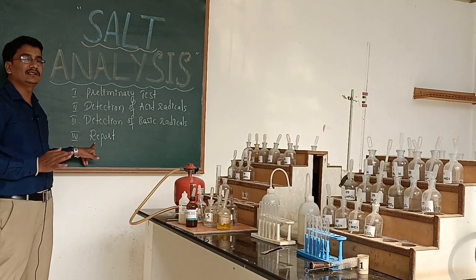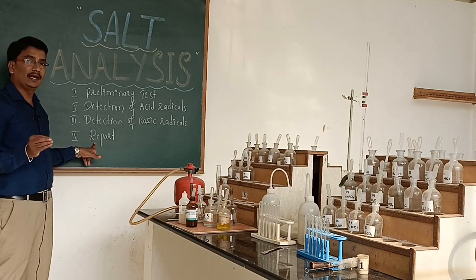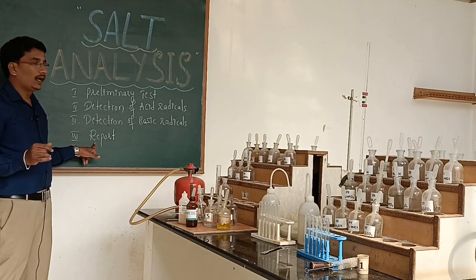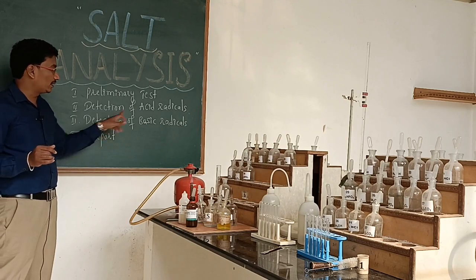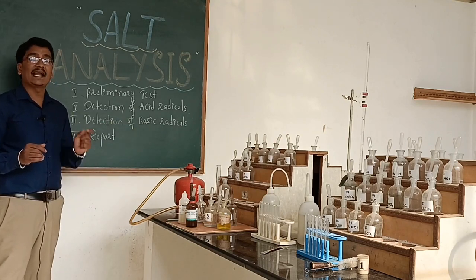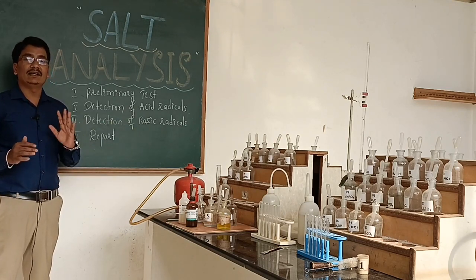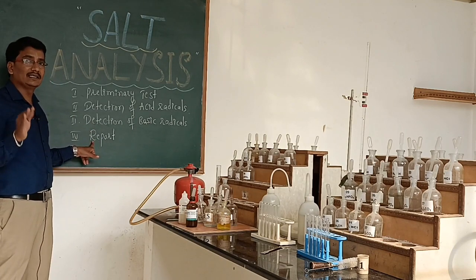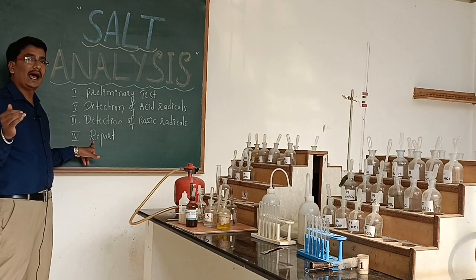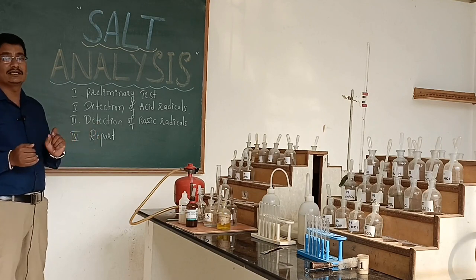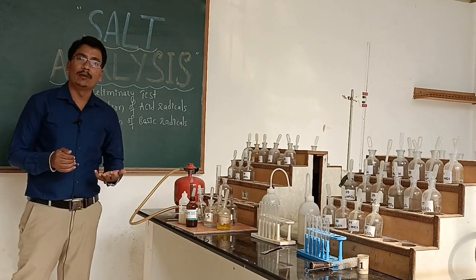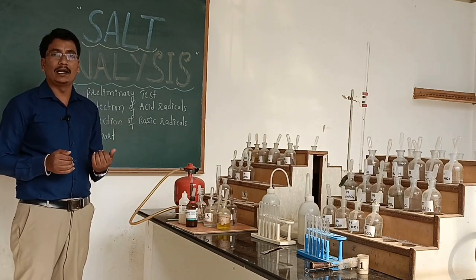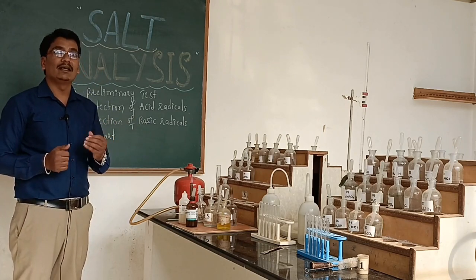In salt analysis we have to identify the acid radical — that is the anion present in the given salt — and we have to detect the basic radical, which is the cation present in the given salt. Finally, we have to report that the given salt contains a specific cation and anion, for example, sodium, ammonium chloride, or ammonium bromide.